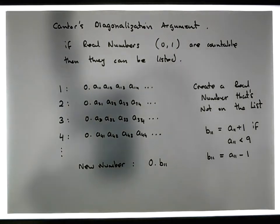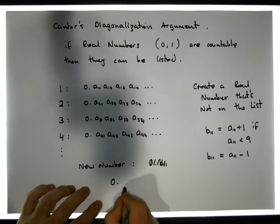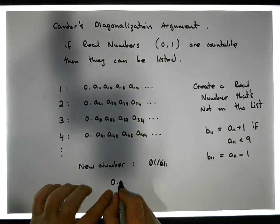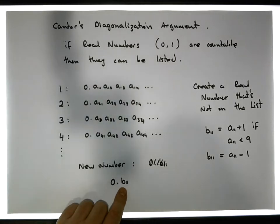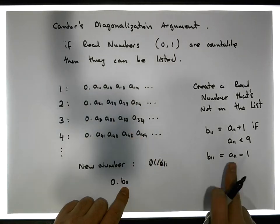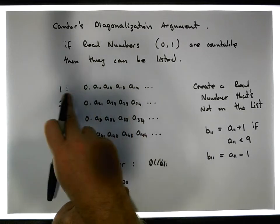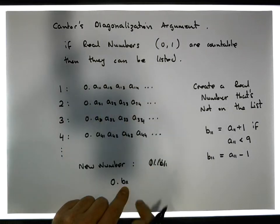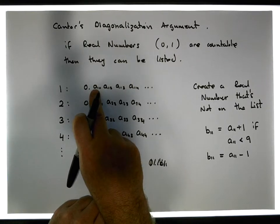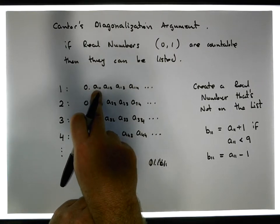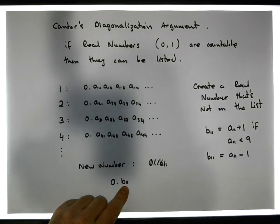The important thing that's actually happened here is that this new number that I'm creating, that has B11 as the first digit, is going to be different to the first real number. The reason why it's going to be different to the first real number is because the first digit of this number is going to be different to the first digit of this first real number, simply because I've either added one onto it or subtracted one.